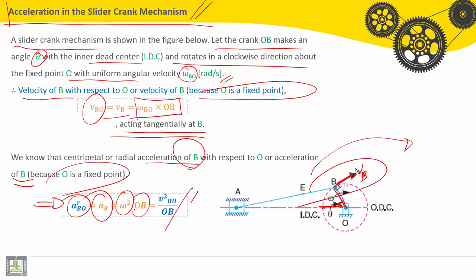Finally, it should equal VB squared divided by the length of the crank OB.